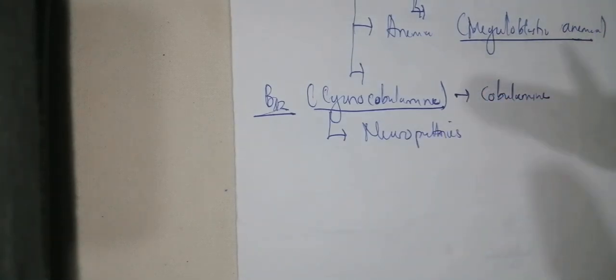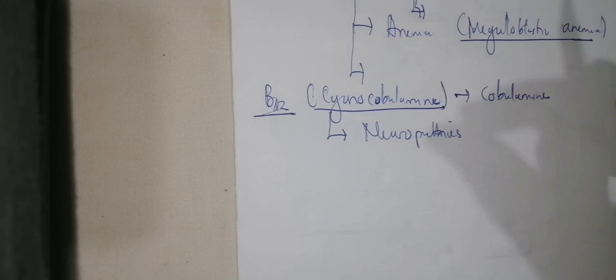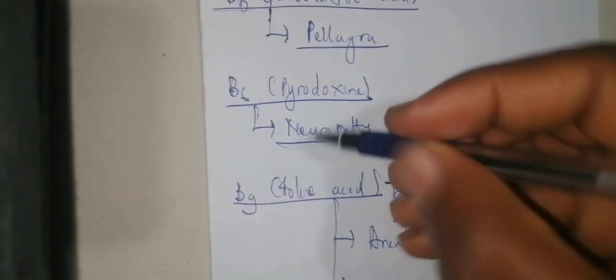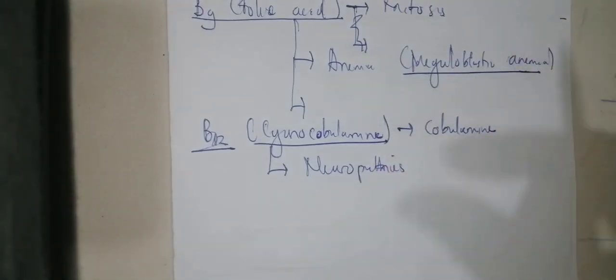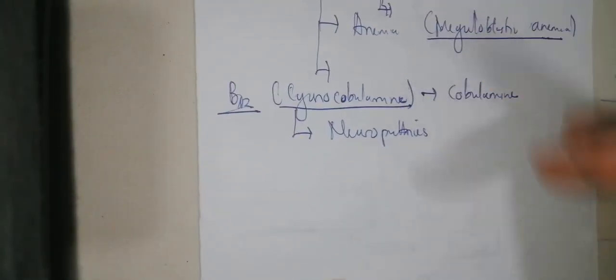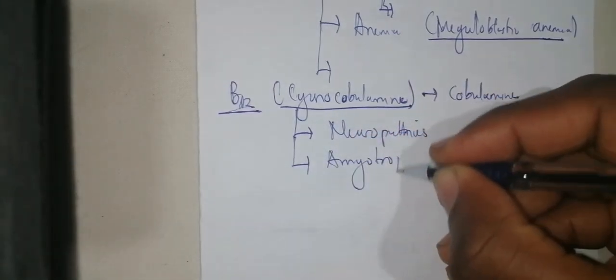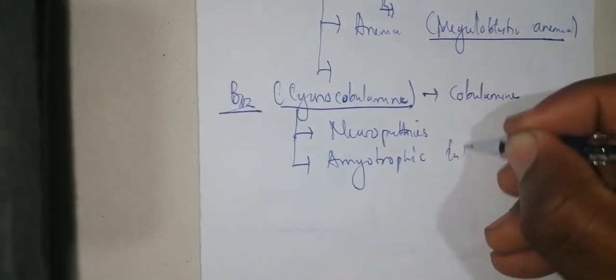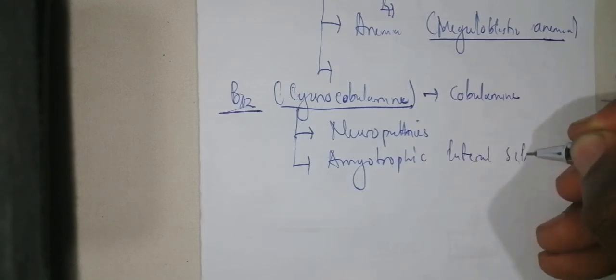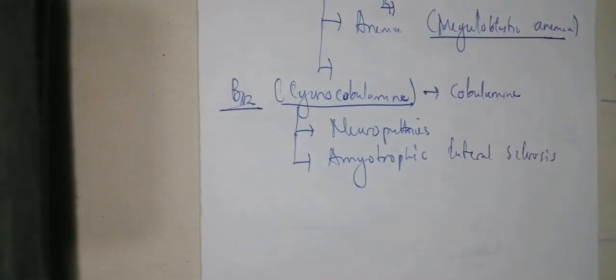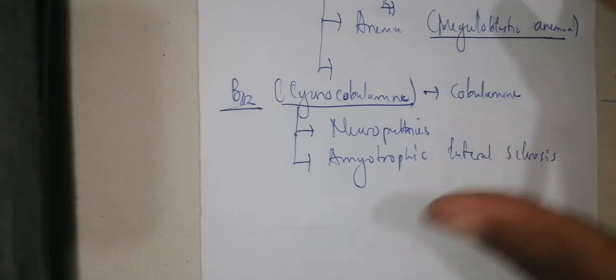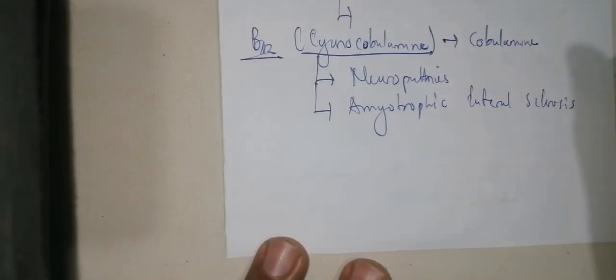Vitamin B12 deficiency is associated with both central and peripheral nervous system disorders. In B6 deficiency we had peripheral neuropathy, but in B12 deficiency you can have both peripheral and central neuropathies. The central neuropathy that can occur here is amyotrophic lateral sclerosis.